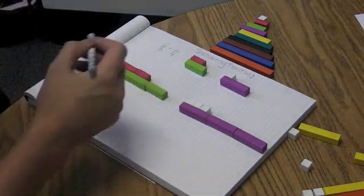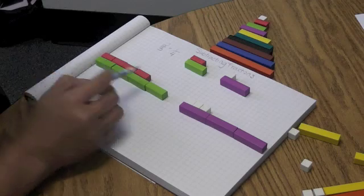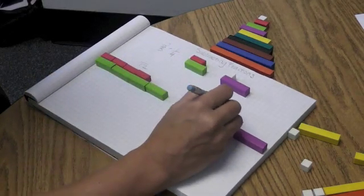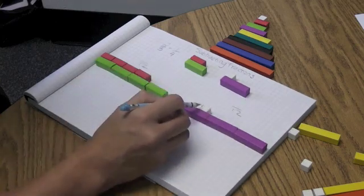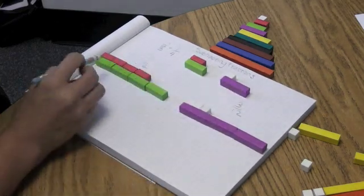So now, what does this actually equal in terms of numbers? We've already decided that the denominators for both of these fractions are now equal to twelve. This one's pretty easy. I've got three twelfths.